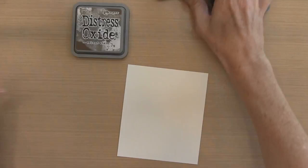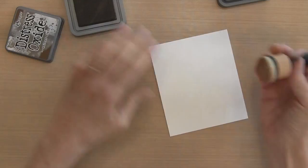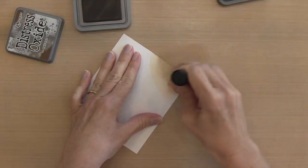I'm going to start with some Distress Oxide ink. I have just two applicators and I just switch out the foam tops. I'm going to use Walnut Stain in the corner. I'm using a piece of Canson XL mixed media paper—it's a very thin bright white paper.